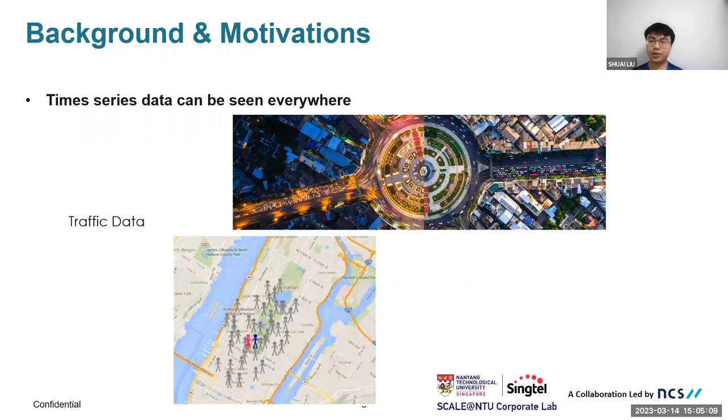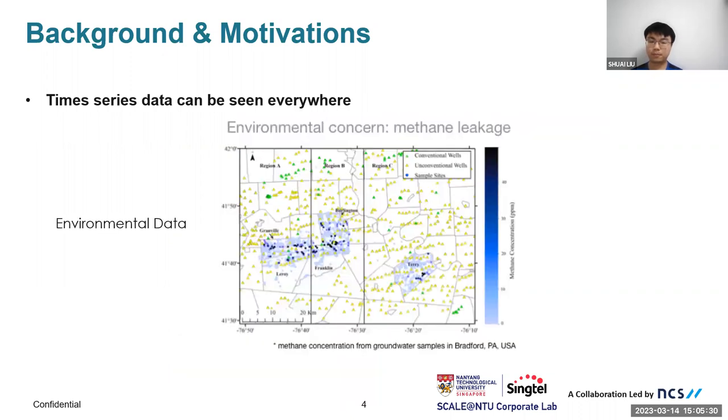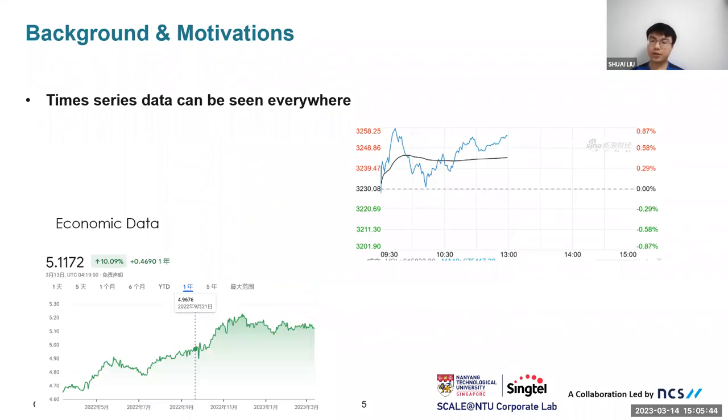Firstly, as we know, time series data can be seen everywhere in our daily life. Just to give a few examples, from traffic speed data to road occupation data, they can all form time series. Also, environmental data from the AQI, PM2.5, weather, temperature, to moisture. And financial data from exchange rate to stock market. There are many other kinds of time series data all around our daily lives.